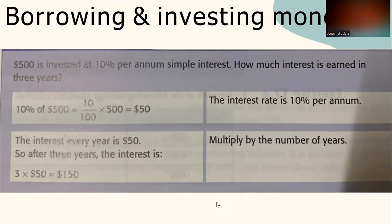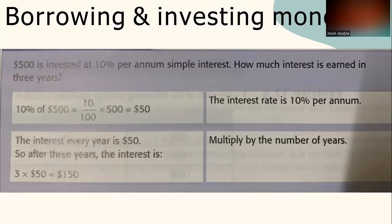Example: $500 is invested at 10% per annum simple interest. How much interest is earned in three years? 10% of $500 = $50, so the interest every year is $50. After three years, the interest is $50 × 3 = $150.